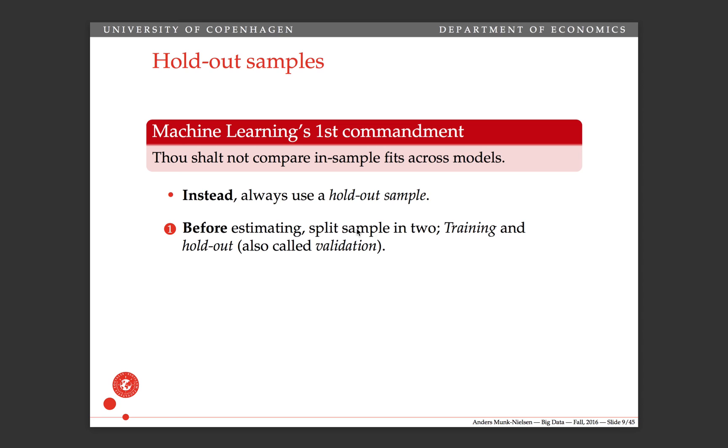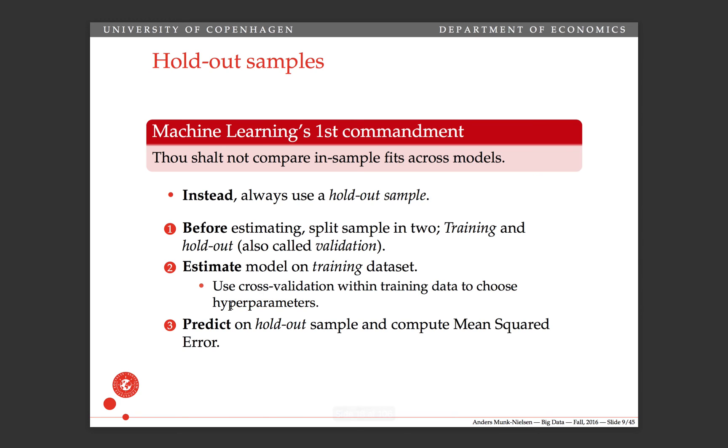So the way you do your estimation is before estimating, you split your sample into a training data set and a holdout data set, which is also referred to as a validation data set. Then you estimate your model on the training data set. And you use cross validation within the training data set to choose any hyper parameters that there might be, such as a bandwidth, for example, in kernel regression, or the penalty parameter for lasso and ridge. Then you predict in the holdout sample and compute the mean squared error there.